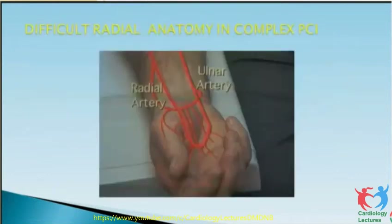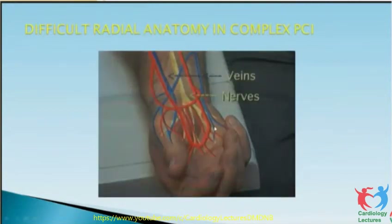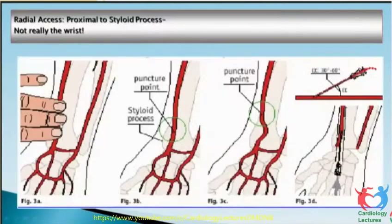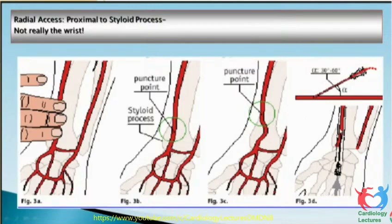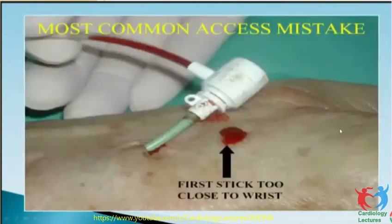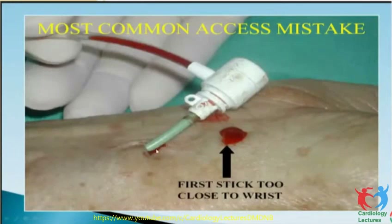Function not over the junction — this is very important. When puncturing the radial artery, it should be just above the styloid process, not at the junction. Palpate the radial artery with three fingers, fix it, and when you have maximal pulsation, puncture at 30 to 45 degrees. A common mistake by younger cardiologists is puncturing the radial artery at the joint, which may cause hemarthrosis, more hematoma, and more pain at the puncture site.